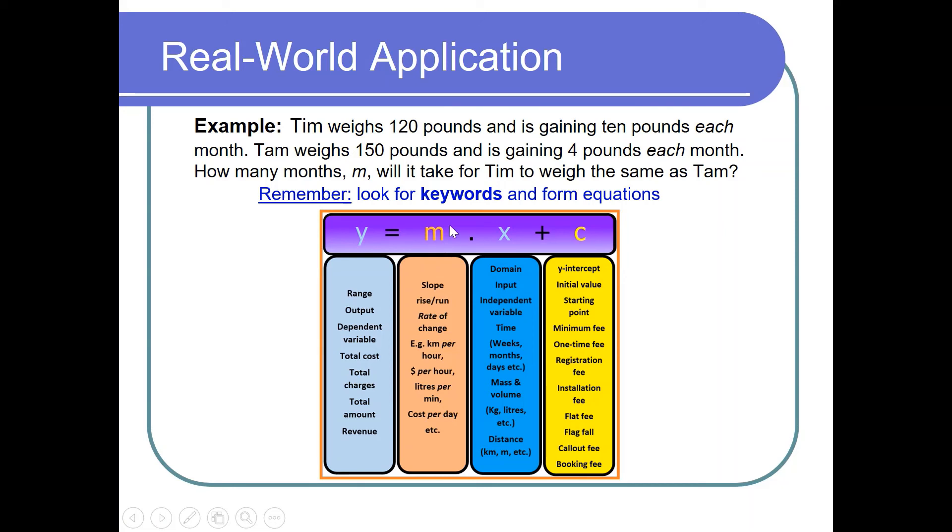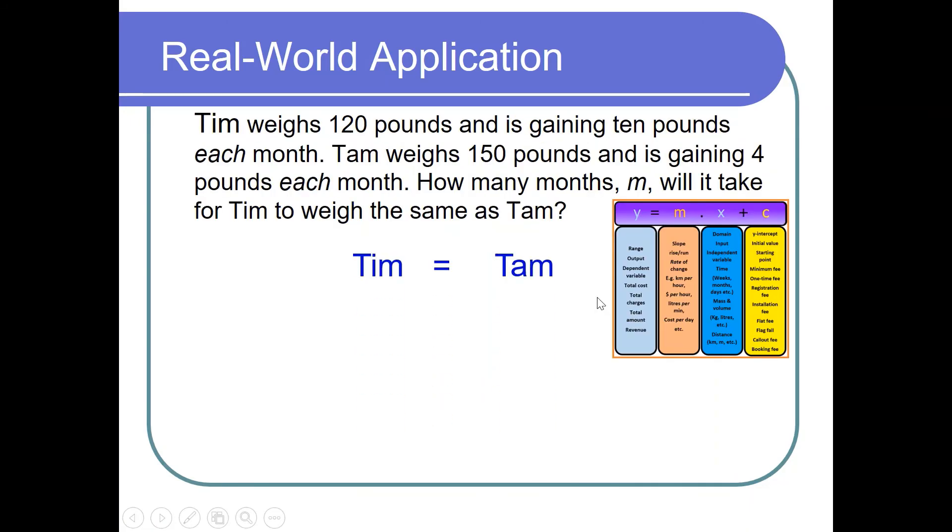So I've got the two pieces of information I need will be slope and the y-intercept. In this case Tim = Tam, so that's when the weight will be same. The function that mimics Tim's weight is 120 pounds - so that's the initial, the y-intercept - plus 10 pounds each month, so 10m. That's the equation there. I could have written that 10m + 120. Either way is fine. But you need to know this is y-intercept which is 120 and the slope value is 10 which is the rate of change.